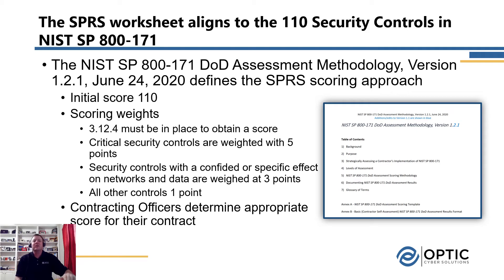Another key thing to note about performing the self-assessment is that security control 3.12.4 must be in place in order to complete the assessment. That's simply because 3.12.4 requires an organization to have a System Security Plan, or SSP, that describes and captures the security capabilities of the systems that will be used in support of the DoD contract if it's awarded. If you don't have an SSP that defines your security capabilities, you don't have that platform to do the assessment from — so that would be the first place to start.